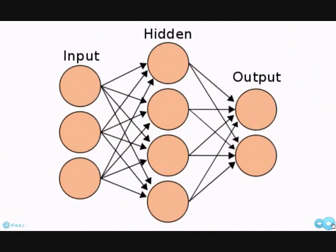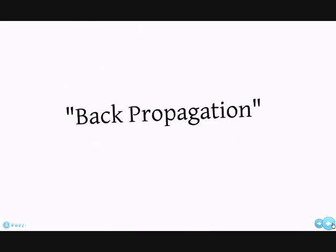Here is a simple neural network. It consists of three layers: an input layer, where it receives information; an output layer, where it displays the processed information. Since we only get to interact with the input and output layers, we call the middle one the hidden layer, even though it does the most work.